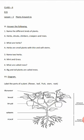Next, Roman numeral six - Answer the Following. Number one: name the different kinds of plants. Answer: herbs, shrubs, climbers, creepers, and trees. Number two: what are herbs? Answer: herbs are small plants with thin and soft stems. Write the answer exactly like that.